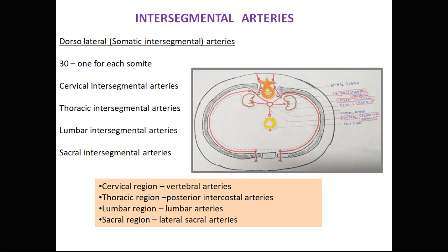The intersegmental arteries in the cervical region form the vertebral artery, and the seventh cervical intersegmental artery forms the axis artery of the upper limb. The intersegmental arteries in the thoracic region give rise to the posterior intercostal arteries. In the lumbar region they form the lumbar arteries, and in the sacral region the lateral sacral arteries.